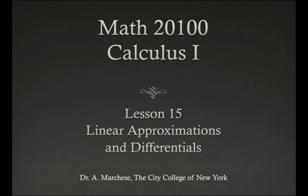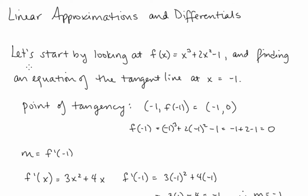This is lesson 15 in our Calculus 1 series: Linear Approximations and Differentials. Let's start this lesson by looking at f of x equals x to the third plus 2x squared minus 1, and finding an equation of the tangent line at x equals negative 1.